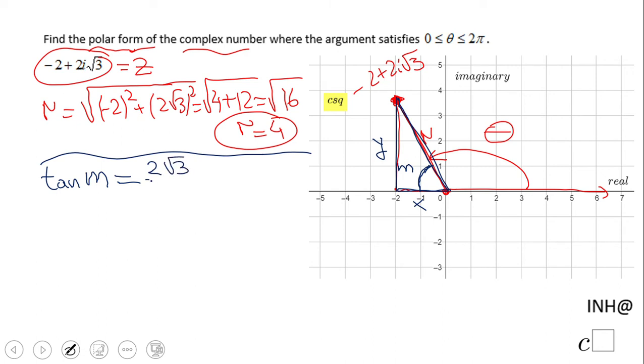2 square root of 3 over 2. We simplify, we get square root of 3. For finding M, I'm gonna need to use the inverse of the tangent.